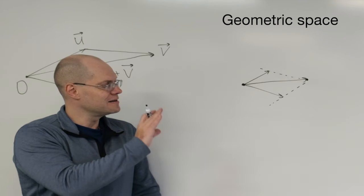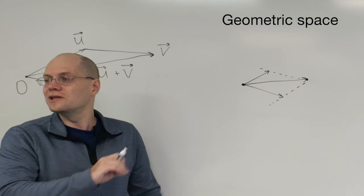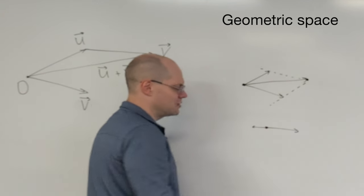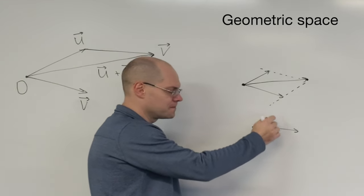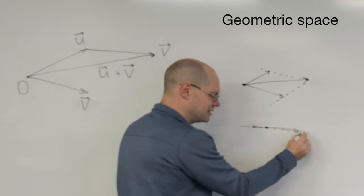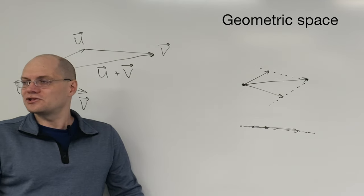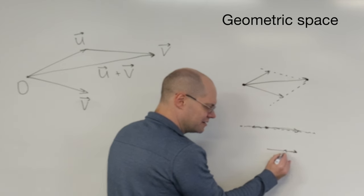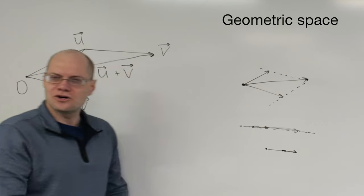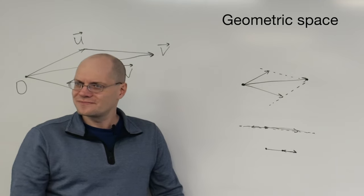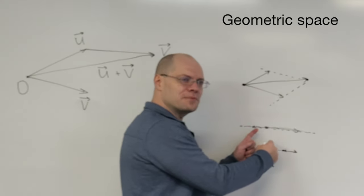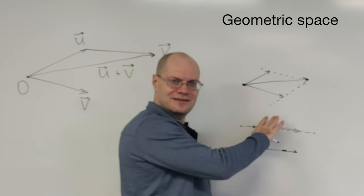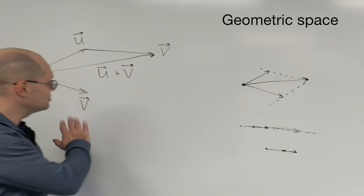But it has a flaw. The flaw is that the parallelogram rule doesn't work when the two vectors are collinear. For example, if one vector is like this and another vector points along the same line, maybe the same direction or opposite direction, then when you try to do the parallelogram rule, the two lines won't intersect at a single point. And so the parallelogram rule doesn't work. But the tip to tail rule works without a problem. You just take this vector, you bring it to the tip of the other, and there's their sum right there.